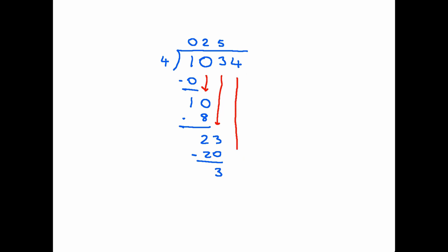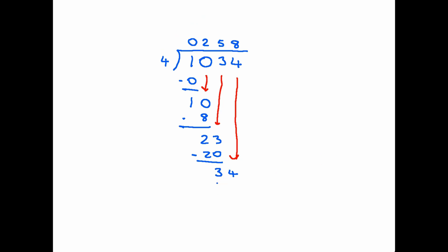With three remaining, we bring the four all the way down and place it next to the three — we now have 34 divided by four. The answer is eight; there are eight fours in 34. Eight times four is 32; take that away and we are left with two. We've divided 1034 and reached the answer 258, but we have a problem — there are still two remaining.